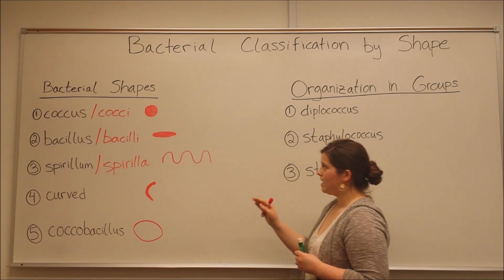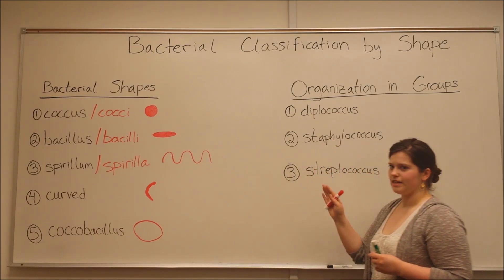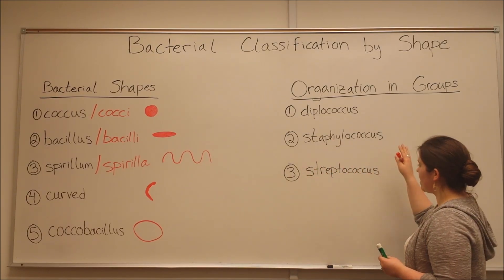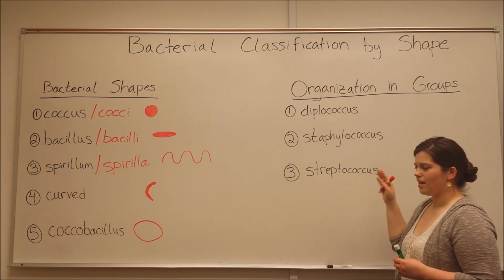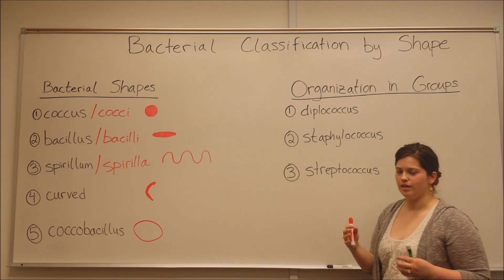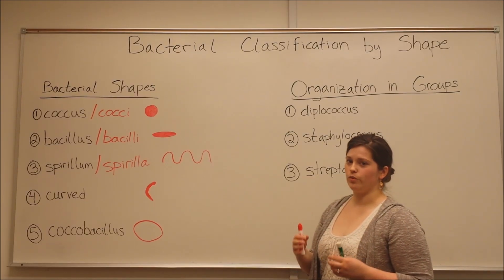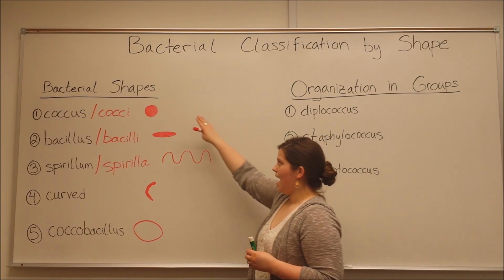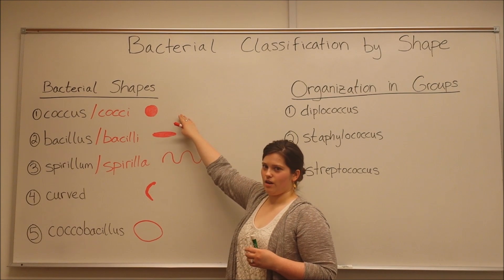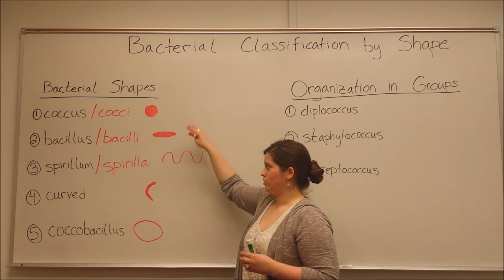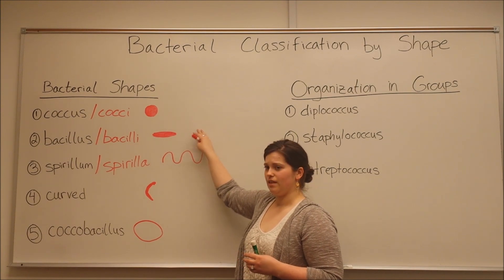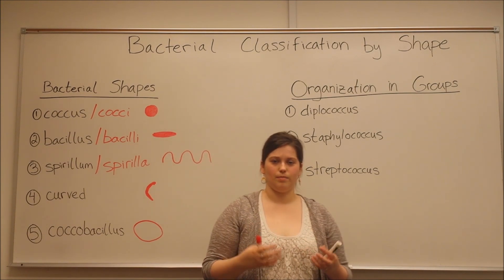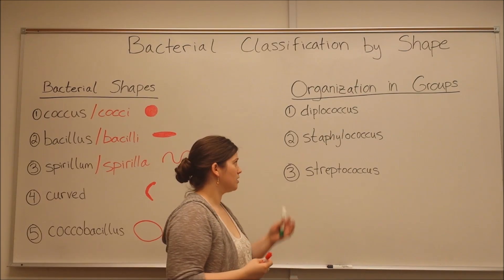In addition to bacterial shape, there are ways to classify bacteria based on their organization into groups — basically how the different cocci cells or bacilli cells actually clump together in groups.